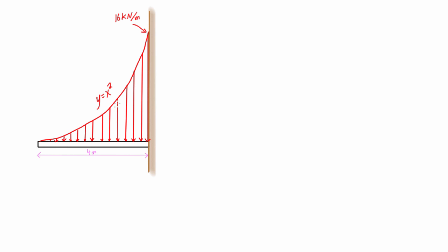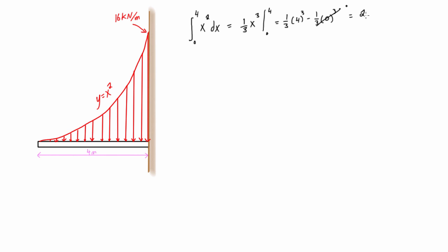To get the area under the curve we just integrate it, taking the integral from 0 to 4 of x² dx. Applying the reverse power rule gives us one-third x³ evaluated on the interval 0 to 4. Plugging in those numbers: one-third times 4³ minus one-third times 0³. That zero term drops out, leaving 4³ divided by 3, which gives us 21.33 repeating kilonewtons.